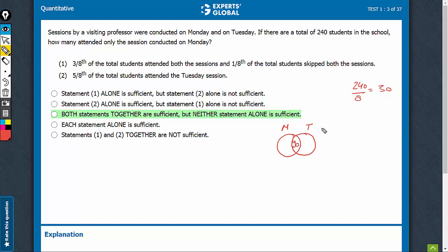1/8th skipped both, so 30 lie outside. The question requires this part, only Monday. There are two variables. Statement 1 is not sufficient.